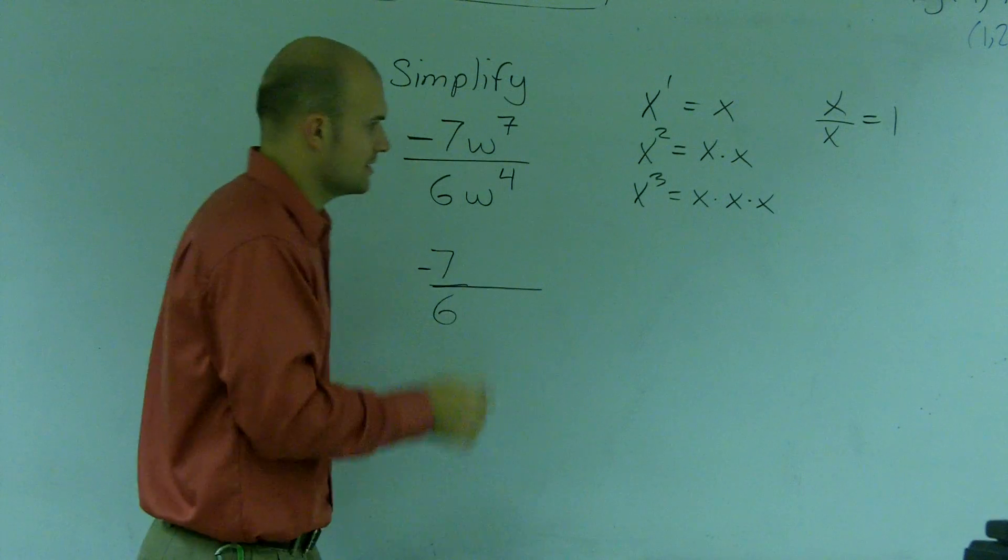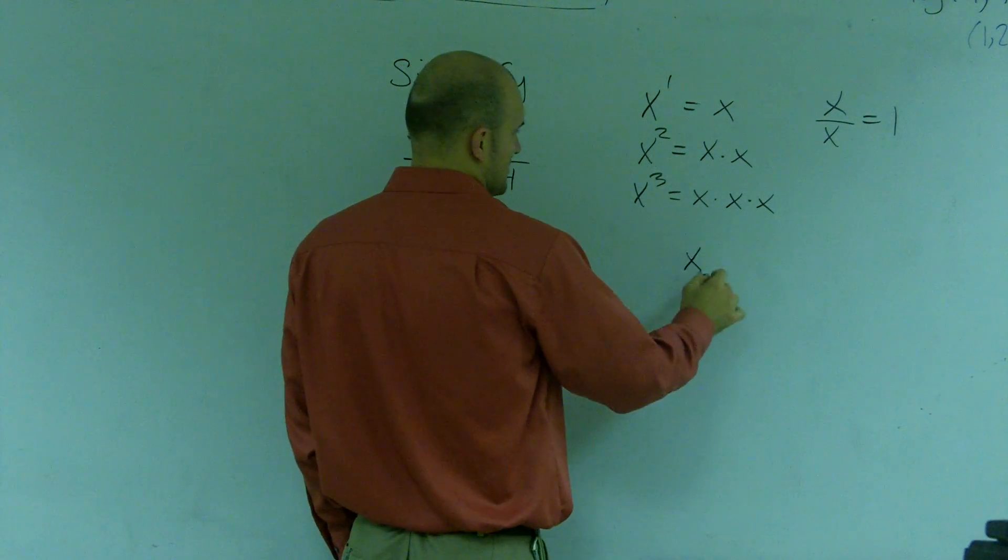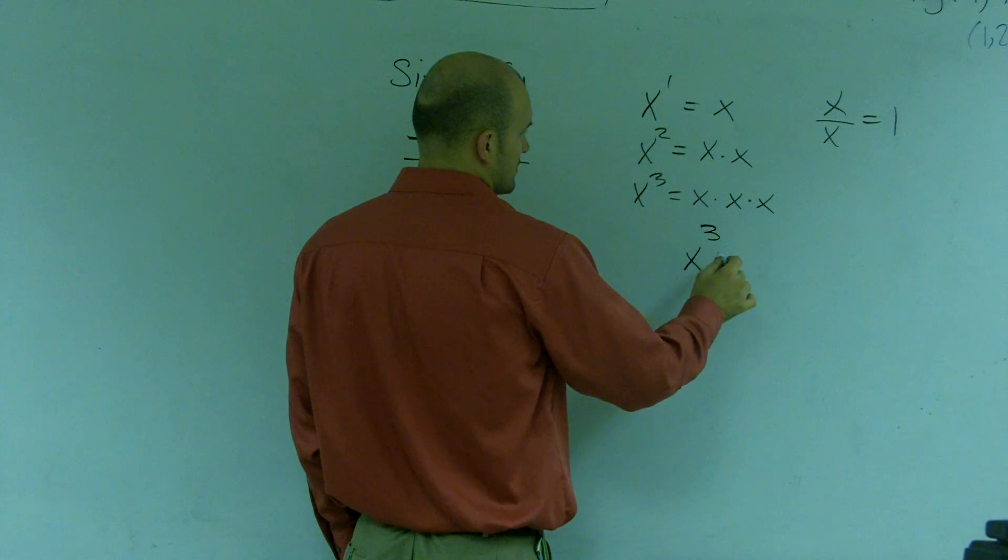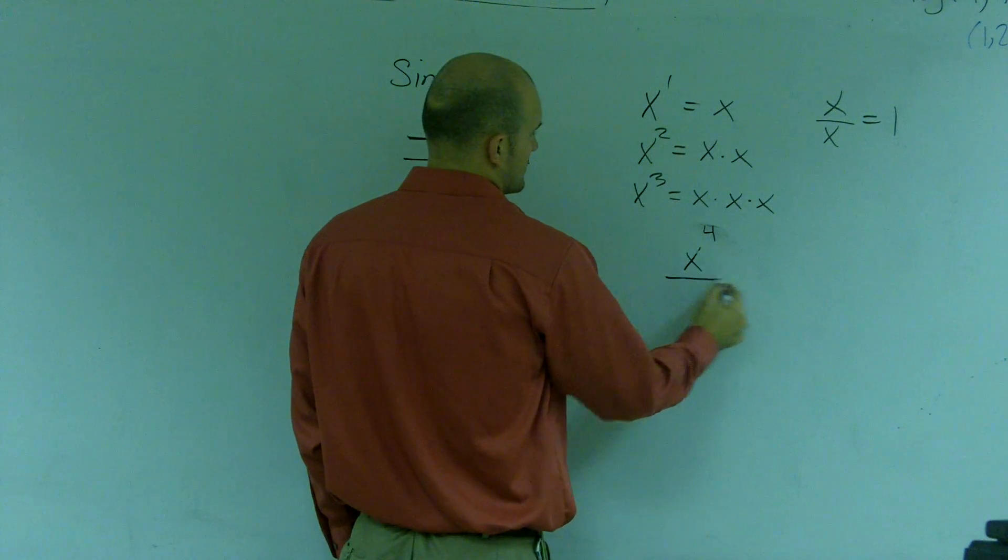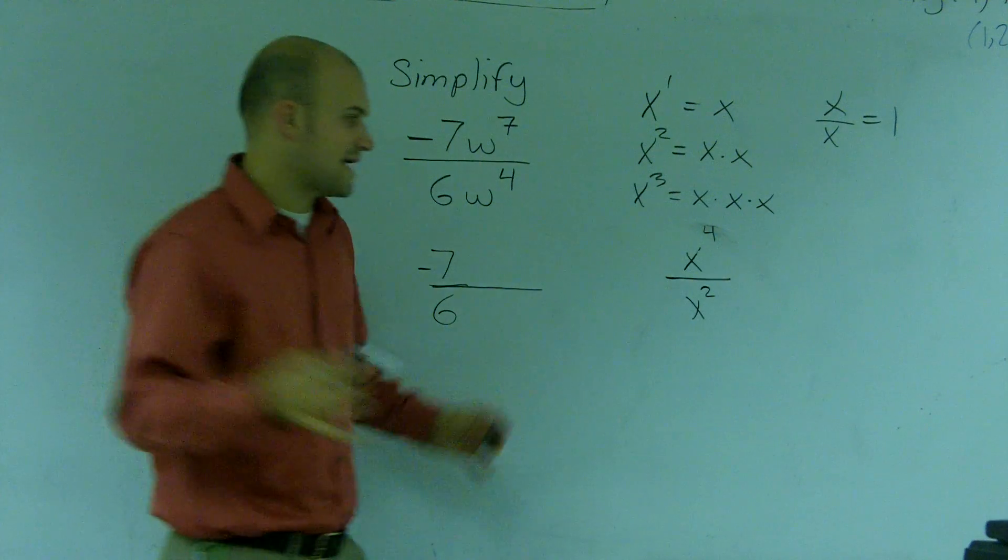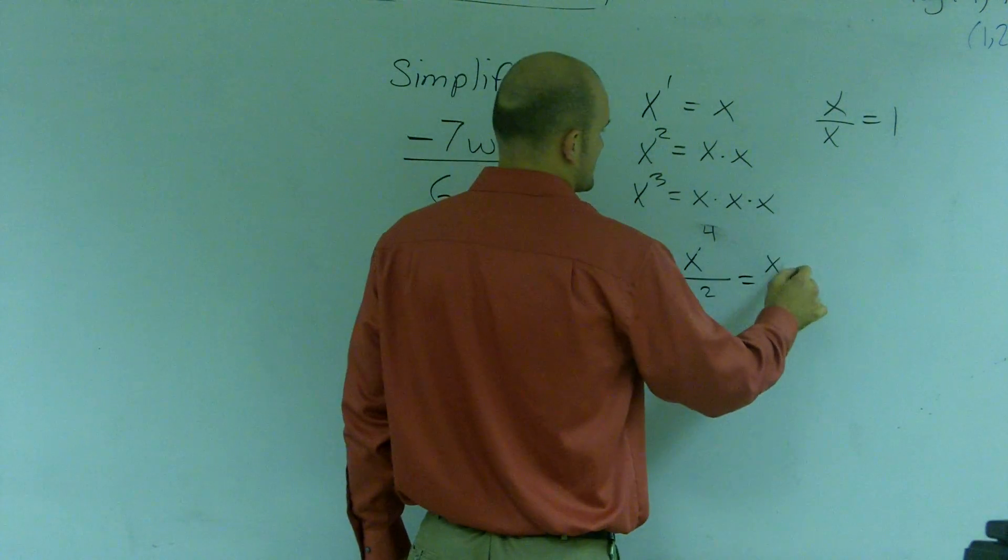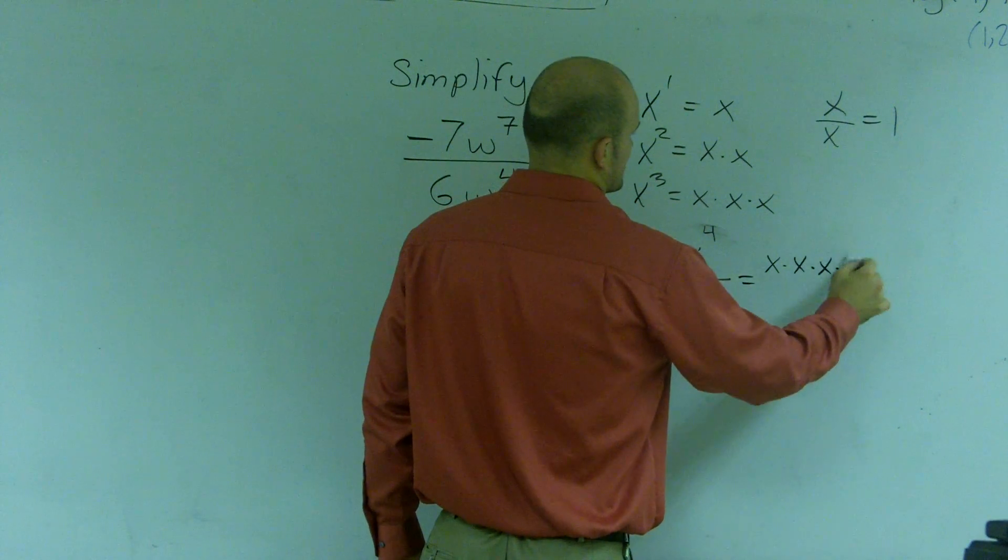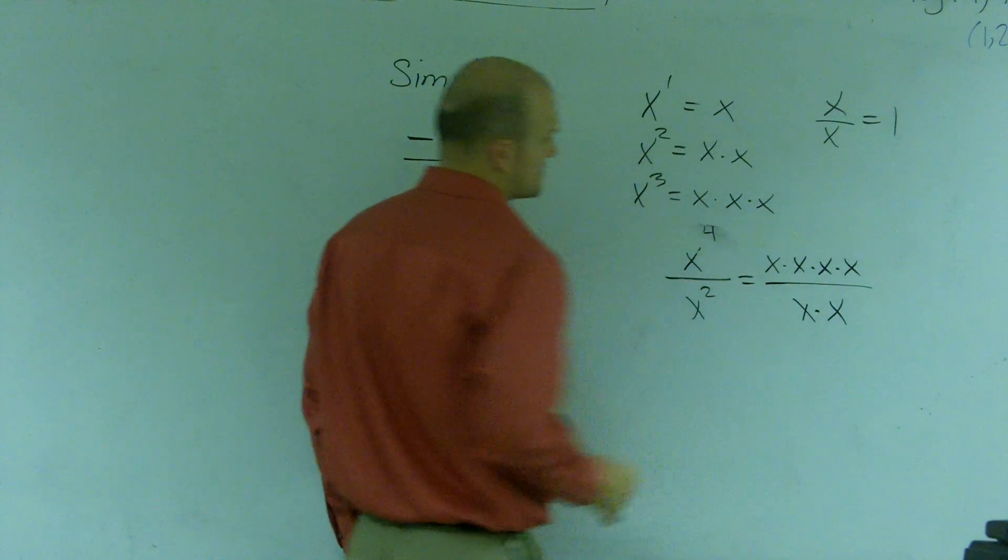So if I was just going to do a rudimentary example, let's do x to the 4th divided by x squared. Now let's write that out in expanded form. What I would have is x times x times x times x divided by x times x.